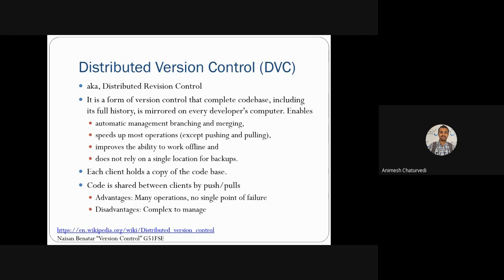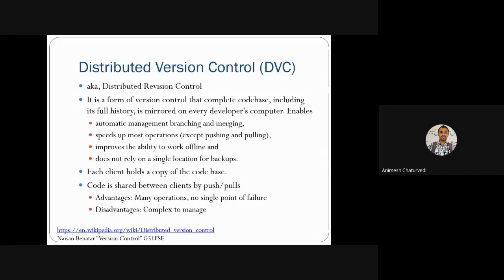Each client holds a copy of the code base, so every developer has their own code base. Code is shared between clients by push and pull — push means sending the code to others or to the distributed server, and pull means requesting the code from the last commit. Advantages include many operations available and no single point of failure.